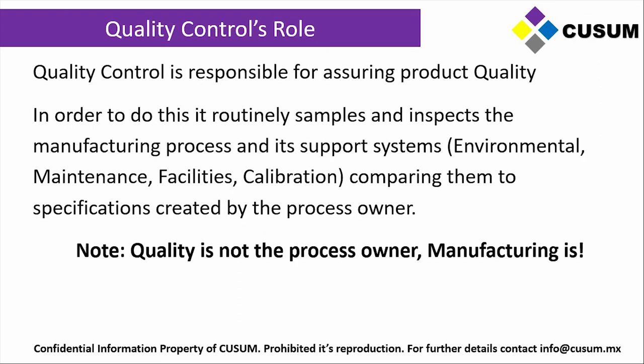Before we start, we need to talk about what is the Quality Control's role. Quality Control is responsible for assuring product quality — that's its main goal. In order to do this, it routinely samples and inspects the manufacturing process and its support systems, be it environmental, maintenance, facilities, calibration, etc. It compares them to the specifications created by the process owner. Quality is not the process owner — manufacturing is.